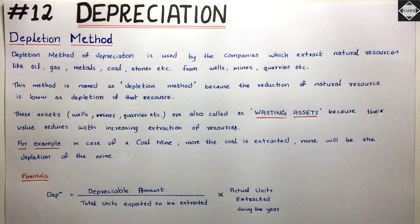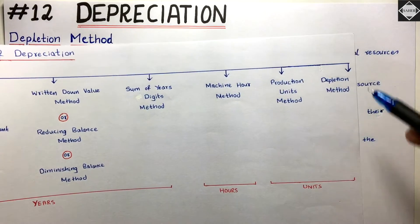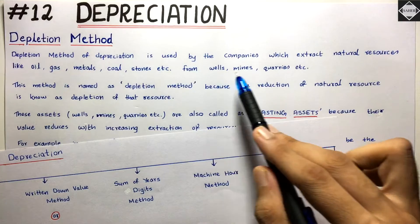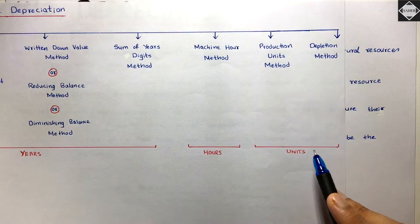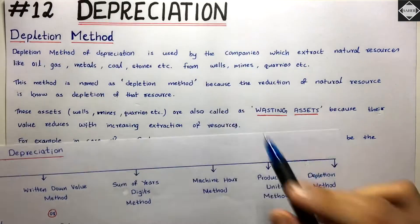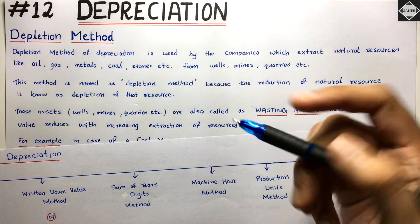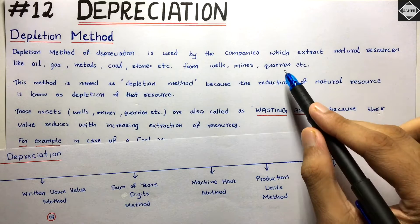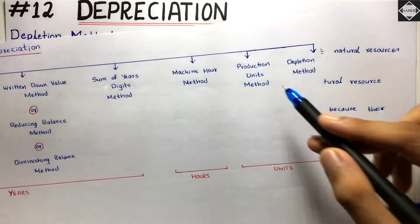Now let's understand the technical aspects of the depletion method. The useful life of the asset — wells, mines, quarries — is expressed in units: how many units can be extracted. For an oil company, how many barrels of oil can be extracted from this well; for coal, how many tons from this mine; for granite, how many square feet from this quarry.